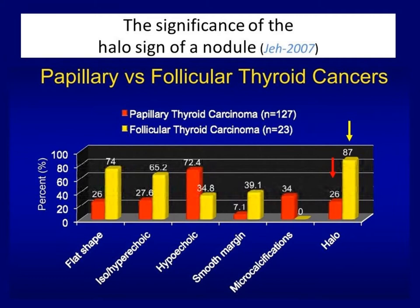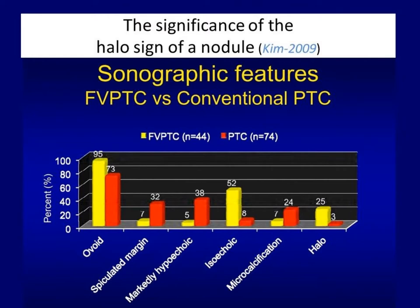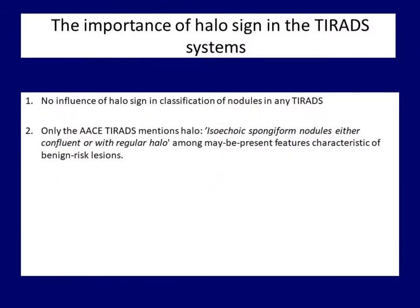The difference is not only of statistical importance — these two types of cancer behave just the opposite, and this is also the case for halo. The occurrence of halo sign in follicular cancers is more than three times higher than in papillary cancer. Furthermore, the conventional and follicular variants of papillary cancer behave differently again; except for non-parallel orientation, the two forms of papillary cancer have a completely different ultrasound presentation. It is therefore not surprising that none of the thyroid systems involve halo sign in their classification. Only the AACE mentions a special form of nodule with halo sign as characteristic of the benign category.